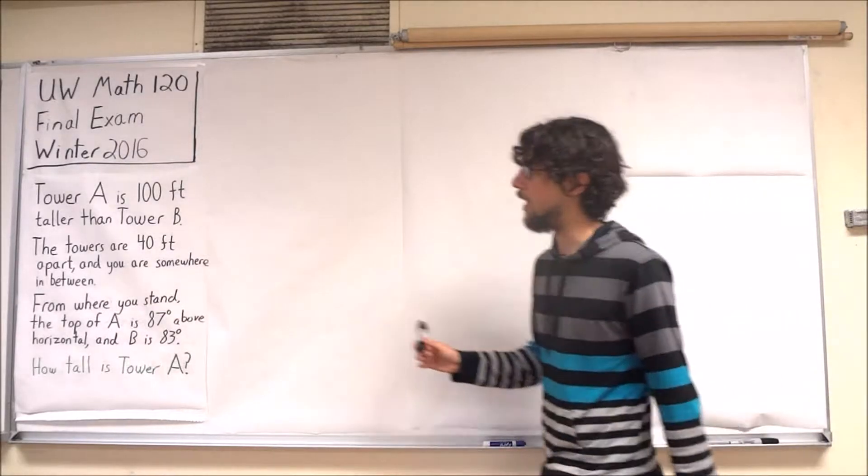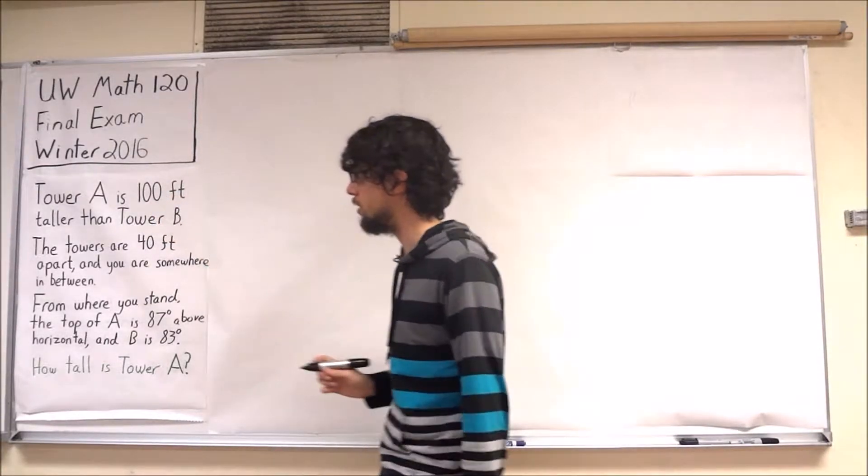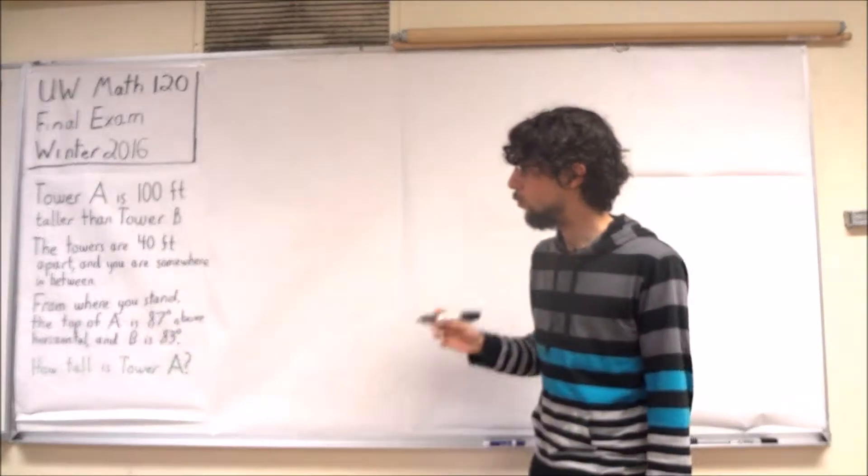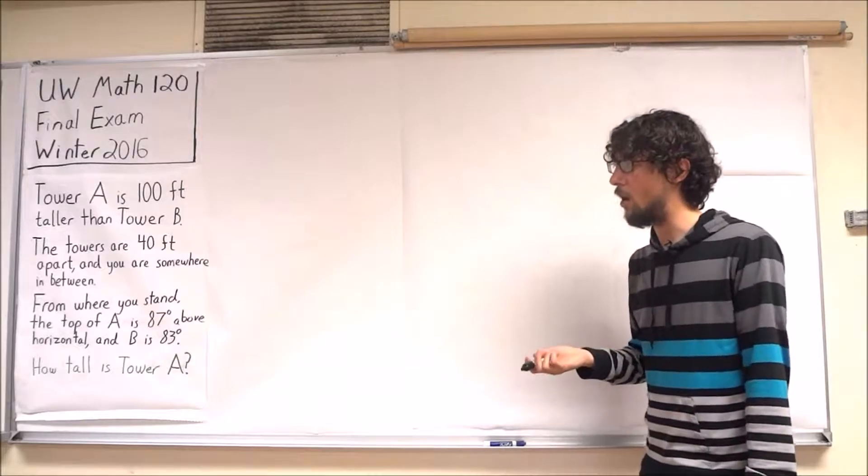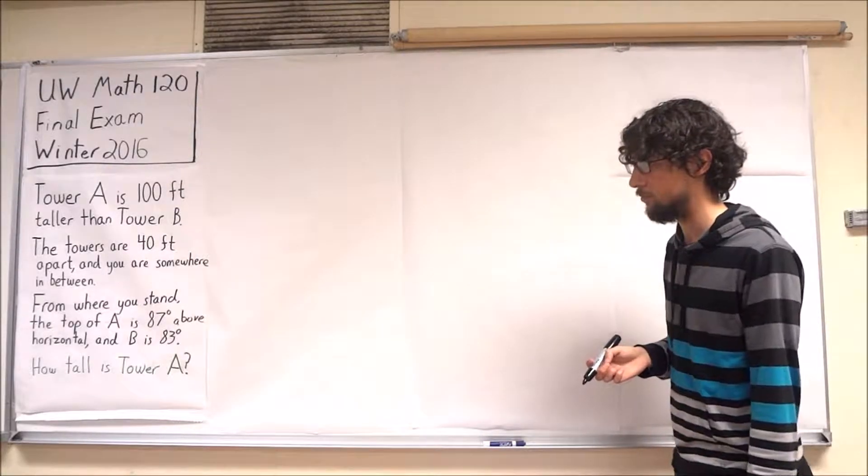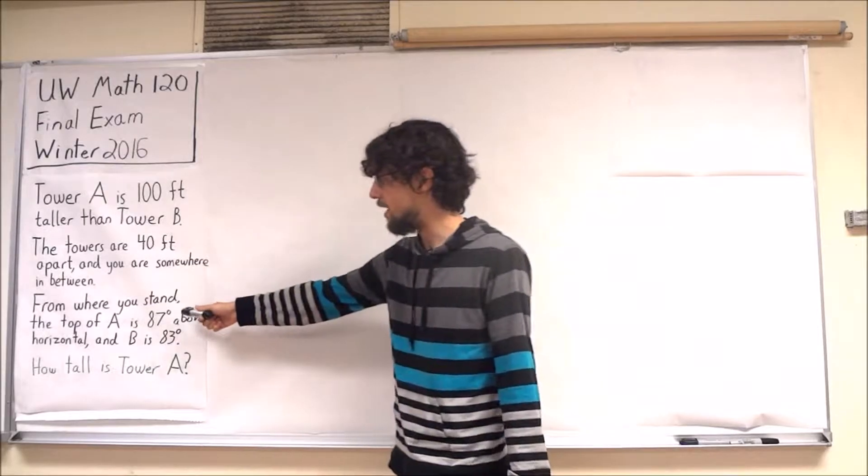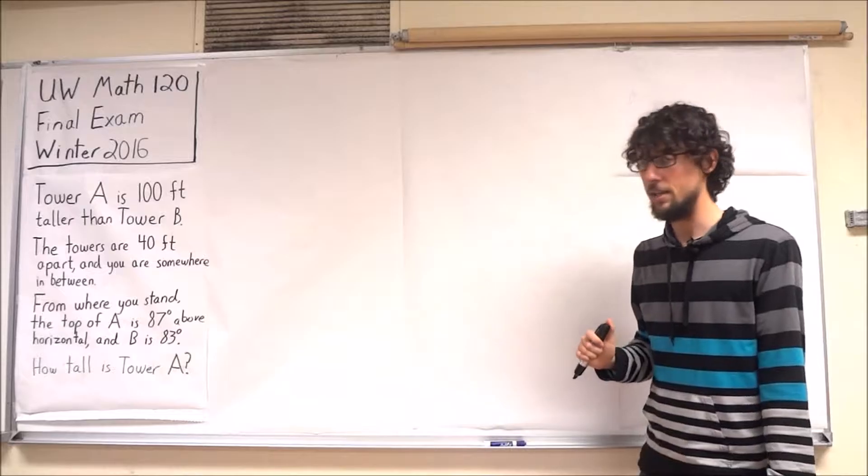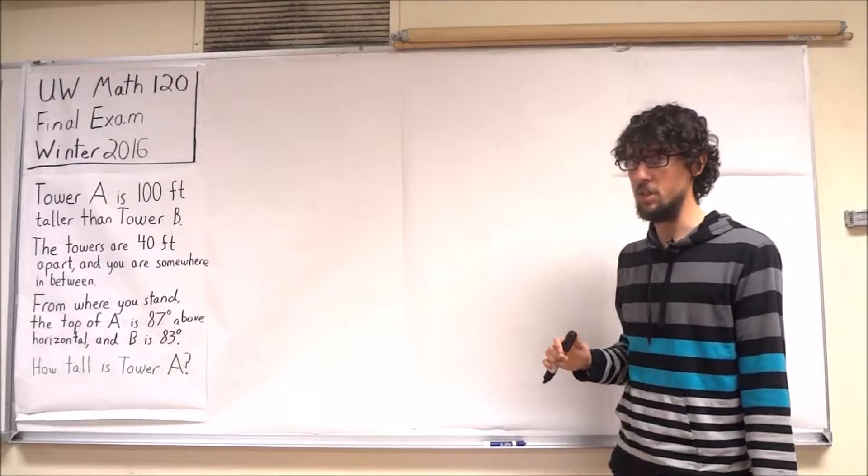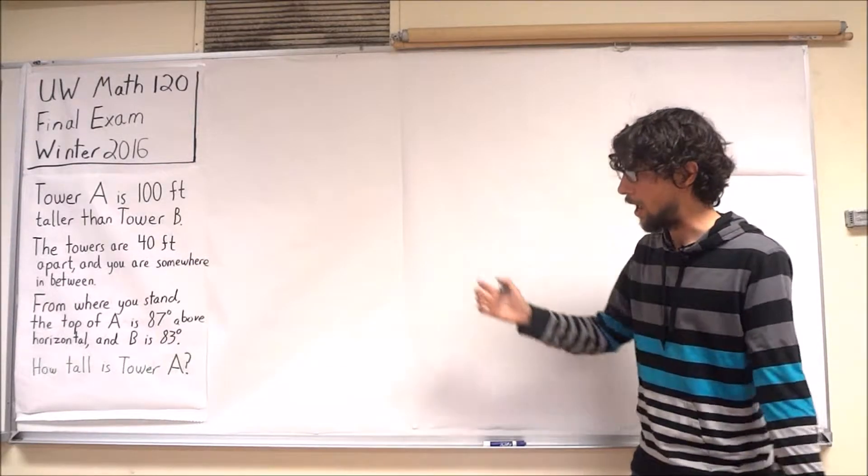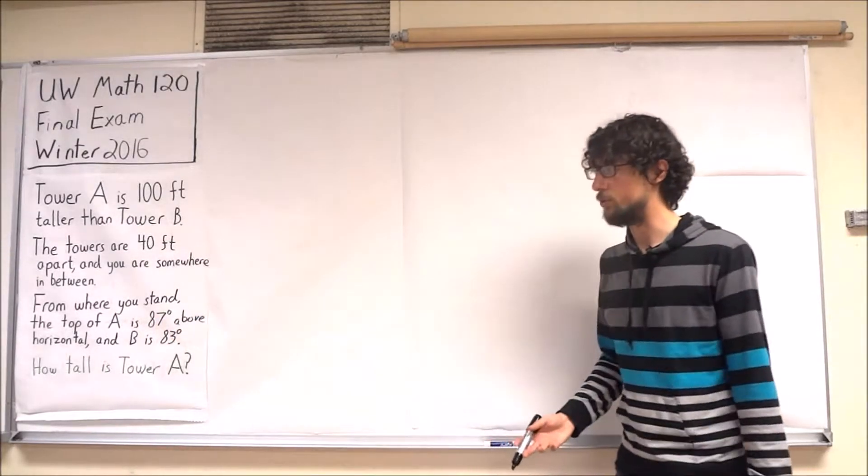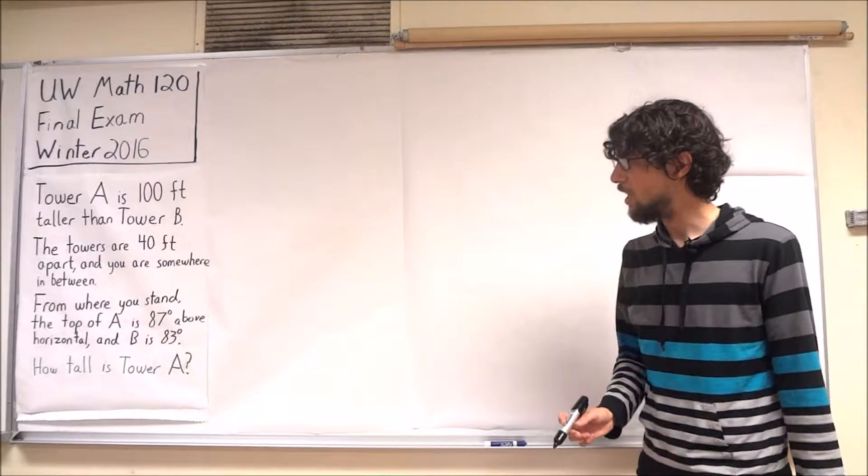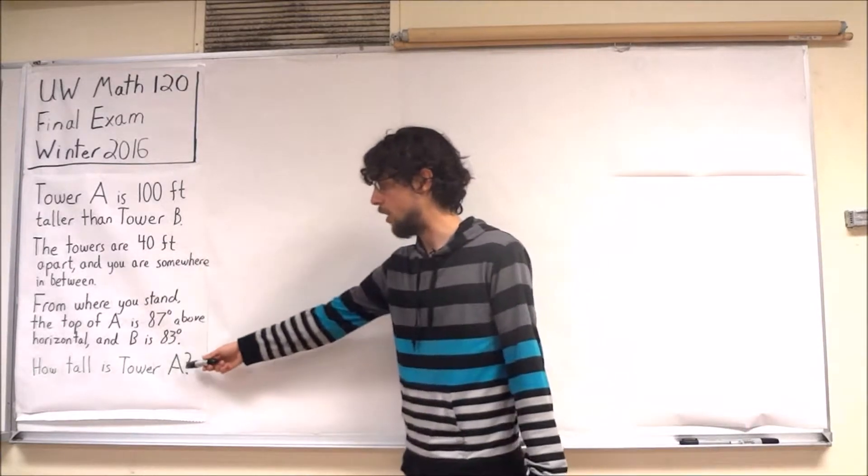We have Tower A is 100 feet taller than Tower B, and the towers are 40 feet apart. We are somewhere in between the two towers, not necessarily at the midpoint. And from where we stand, the top of Tower A is 87 degrees above horizontal, and Tower B is 83 degrees above horizontal. And these measurements are from the ground. We're told to ignore our own height in thinking about this problem. And we're asked to come up with the height of Tower A.